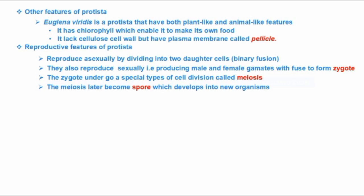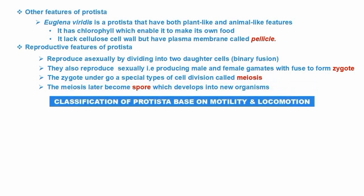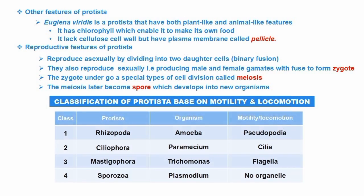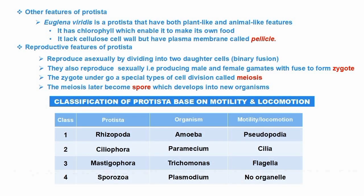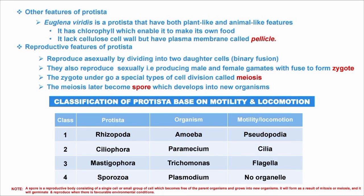Here are the main features of Protista. The borderline between plants and animals is Euglena. We are now going to talk about the classification of Protista based on motility and locomotion. There are four classes of Protista — we have the class, the organism example, and the organ of locomotion.